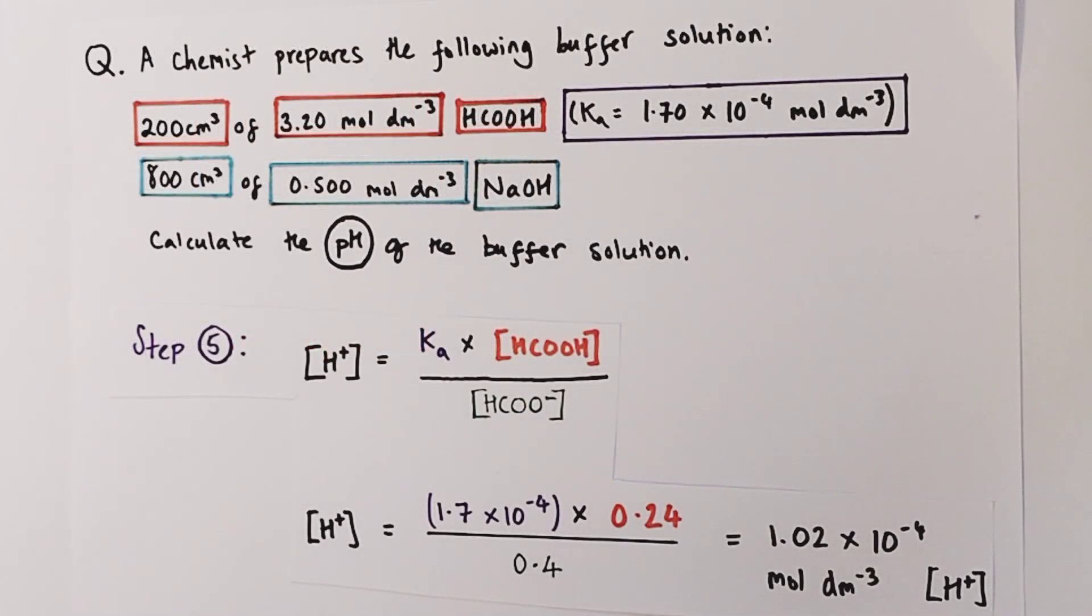Step five requires us to rearrange the Ka expression to make hydrogen ions the subject of the expression. The easiest way to do that is to multiply both sides of the equation by the weak acid concentration, in this case methanoic acid concentration, and divide both sides by the conjugate base concentration, or the methanoate ion concentration. That will leave us with this expression here: hydrogen ions equals the Ka times by the weak acid concentration divided by the concentration of methanoate ions, which is the conjugate base. Literally just plug in the values we generated from our working. So 1.7 × 10⁻⁴ is the Ka value from the question itself, 0.24 was our concentration of methanoic acid worked out previously, 0.4 was our concentration of methanoate ions worked out previously. That generates a hydrogen ion concentration value of 1.02 × 10⁻⁴ mol per litre of hydrogen ions.